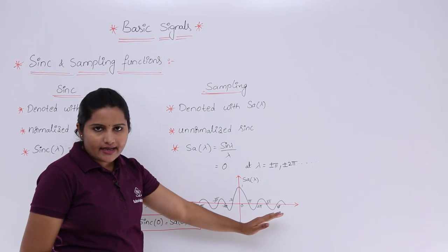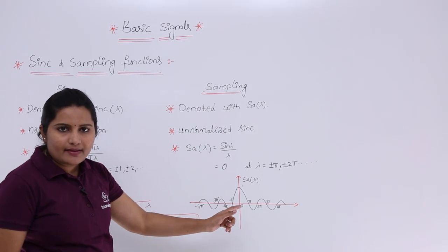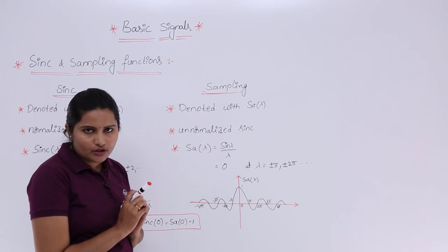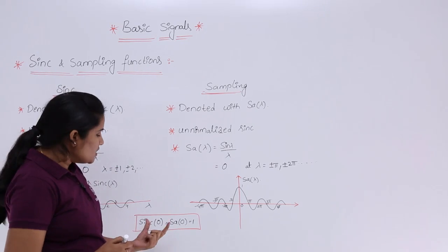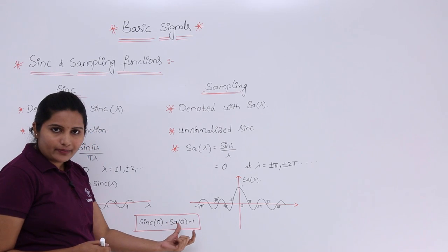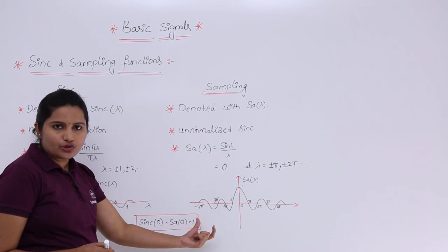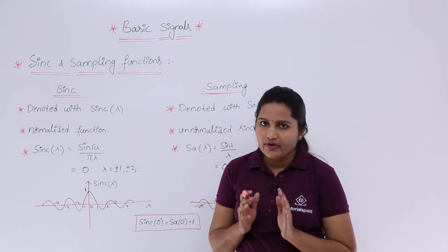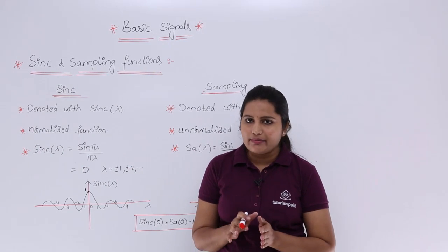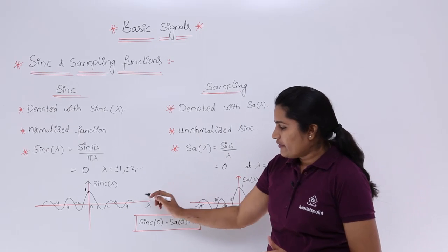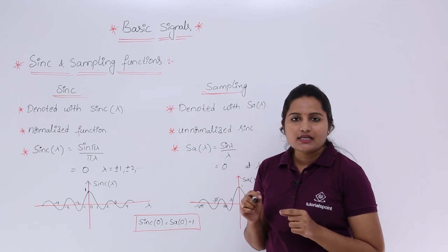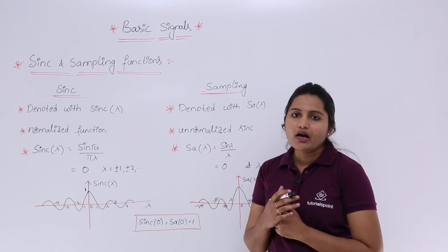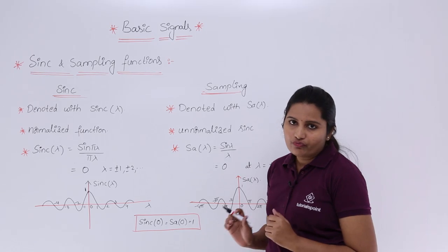You can see in the diagram that both the sinc function and sampling function show a higher amplitude at t equal to 0. That means sinc(0) or sa(0) is equivalent to 1 — the amplitude is equal to 1 whenever t or lambda is equal to 0. When the x-axis value is 0, both sinc and sampling functions show their maximum amplitude, which equals 1.